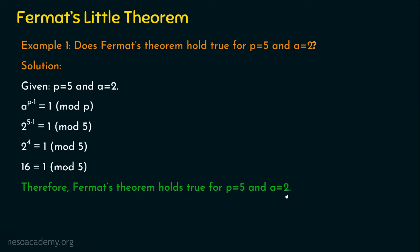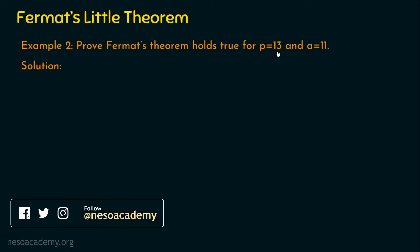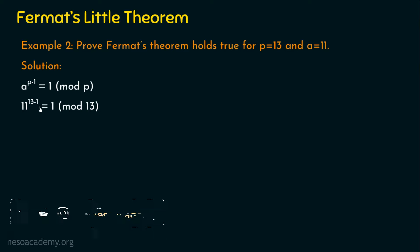I hope Example 1 is clear. Let's see Example 2: we are going to prove Fermat's Theorem holds true for p equal to thirteen and a equal to eleven. The given data are prime number thirteen and positive integer eleven, which is not divisible by p. As per Fermat's Theorem, a to the power p minus one is congruent to one mod p. Substituting, we get eleven to the power twelve is congruent to one mod thirteen.